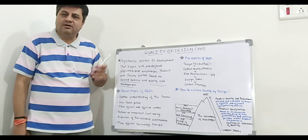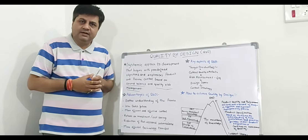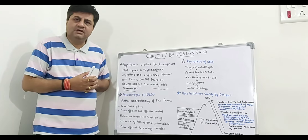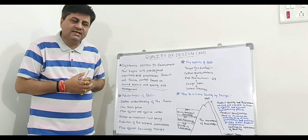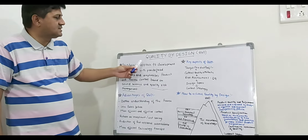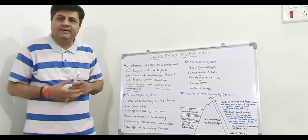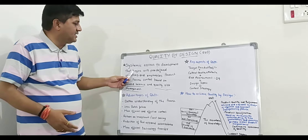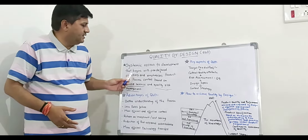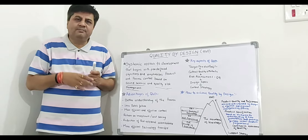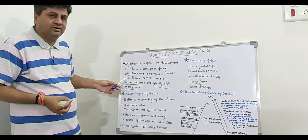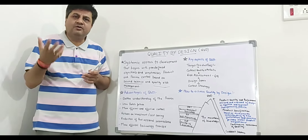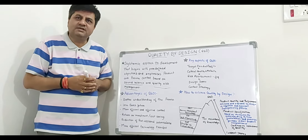QBD is a systematic approach to development. For any type of product development — whether we are developing a tablet or any other product in our pharmaceutical organization — we have to go for a systematic approach, beginning with a predefined objective and emphasizing product and process control.